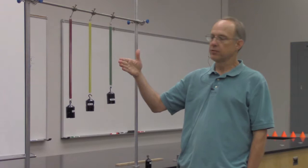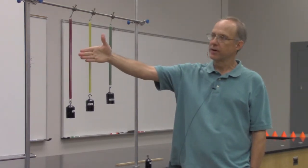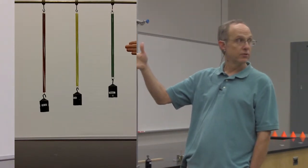We have here three different springs with three different spring constants. We have a weaker spring on the left moving to the stronger spring on the right, from 25 newtons per meter strength to 35 newtons per meter, to 50 newtons per meter strength.